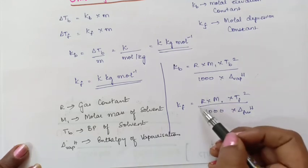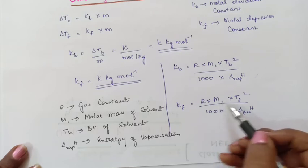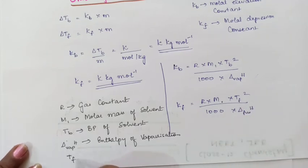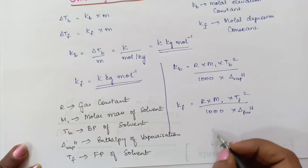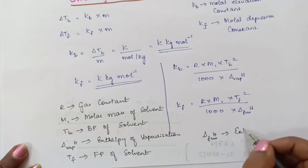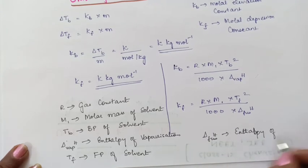And here R is gas constant, M1 is molar mass of the solvent, and Tf is freezing point of solvent. And then delta H fusion is enthalpy of fusion.